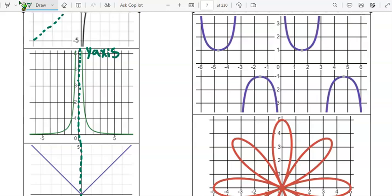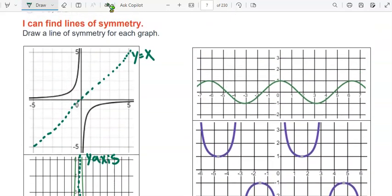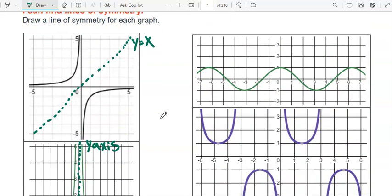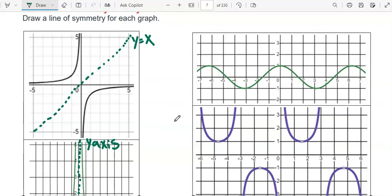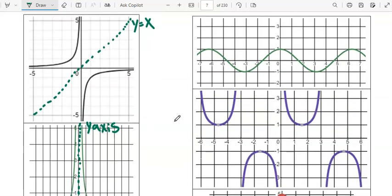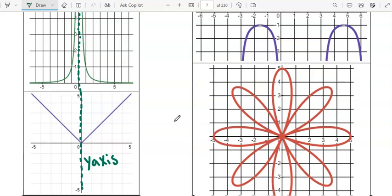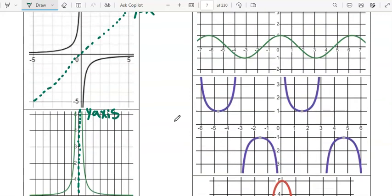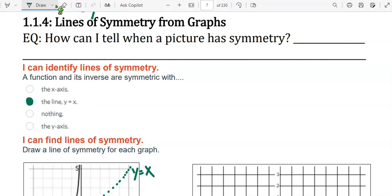Try these other graphs on your own. See if you can draw at least one line of symmetry on each. These graphs may have more than one line. See if you can find more than one as well. Don't forget to answer the essential question.